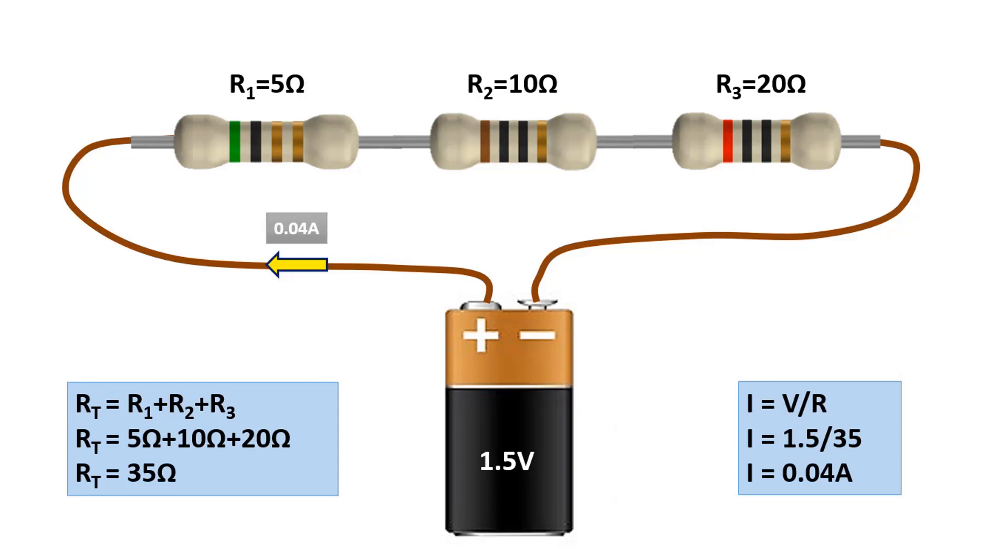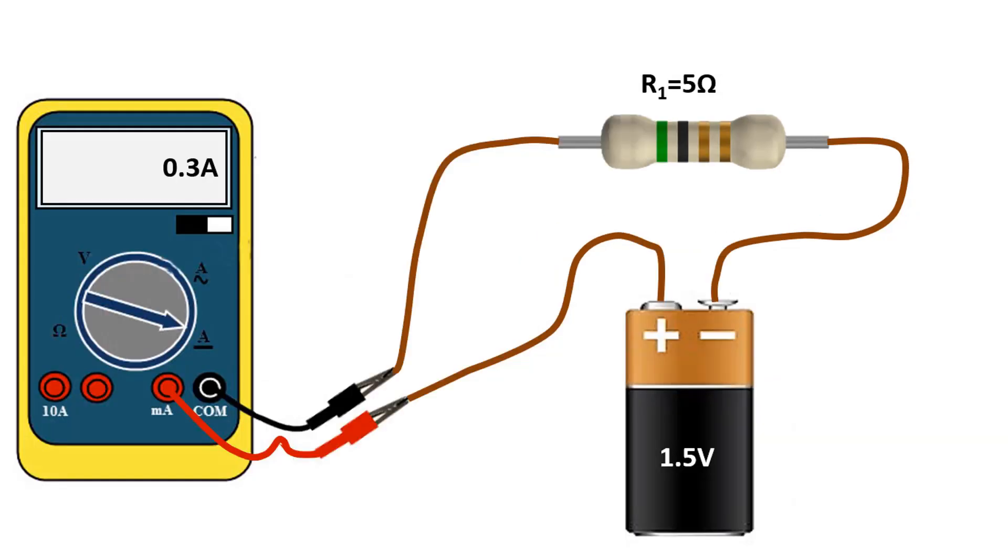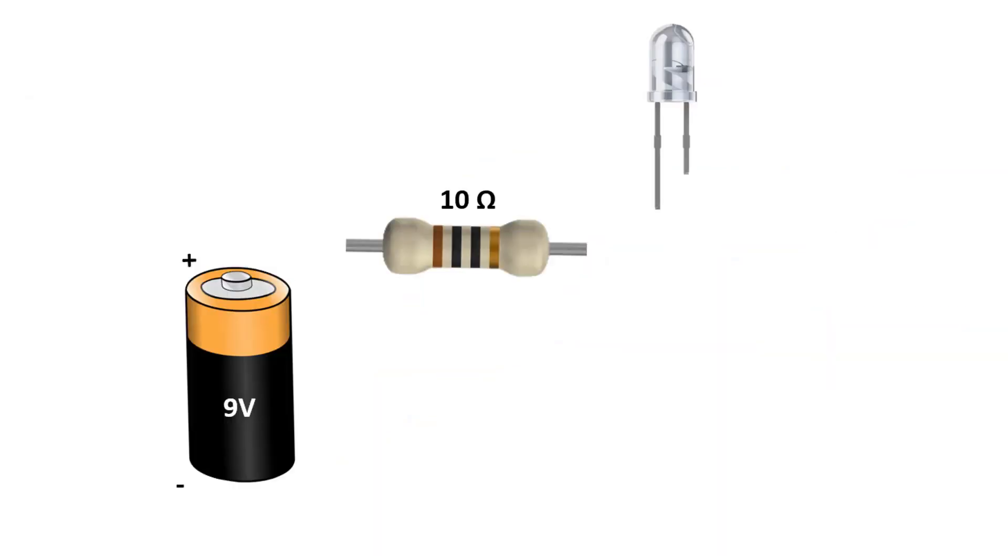We were able to find the current value when we divided the voltage value of the power supply by the total resistance value. We have seen that the current value decreases as the resistance value increases. We can find the same result by measuring the current flowing through the circuit with the help of a multimeter. In the ammeter function, when we connect the multimeter in series with the circuit, we can measure the value of 0.3 amps. This example will be very useful for us to understand the relationship between resistance and current.